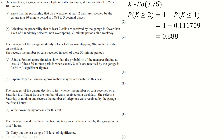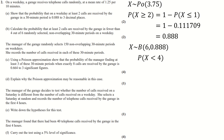For the next part, we want the probability that at least two calls are received in at least four out of six randomly selected 30-minute periods. This is a binomial question nested inside the Poisson. We have six periods, each with the probability just calculated, and we want P(X < 4) = P(X ≤ 3), which we evaluate using the binomial cumulative distribution.